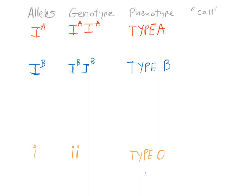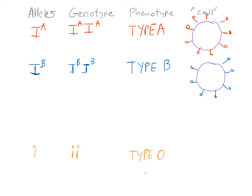So what does phenotype A actually look like on the cell? If this circle is the cell membrane, type A phenotype would make antigens sticking out of the cell with the type A genetic code — shown here as little red lines and circles. The type B cell would look similar but have a different antigen sticking out, represented by blue lines and blue circles. The type O phenotype has a mutation in the allele and doesn't really produce an antigen — no antigen.